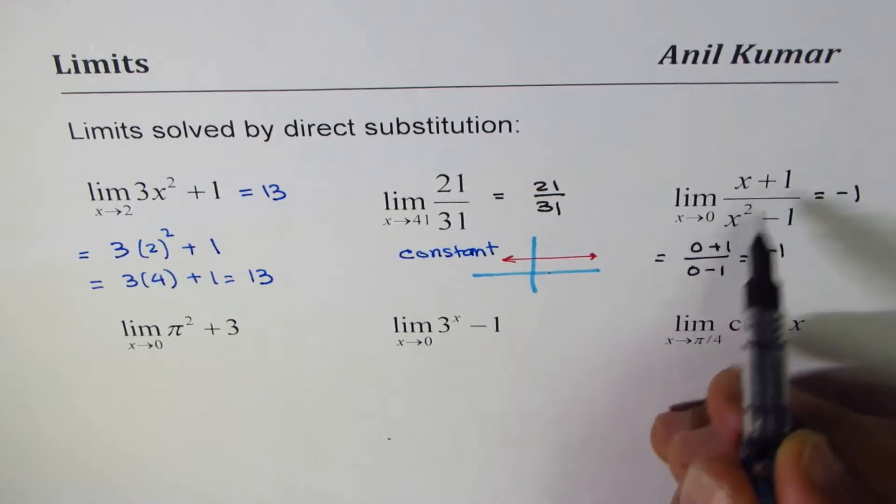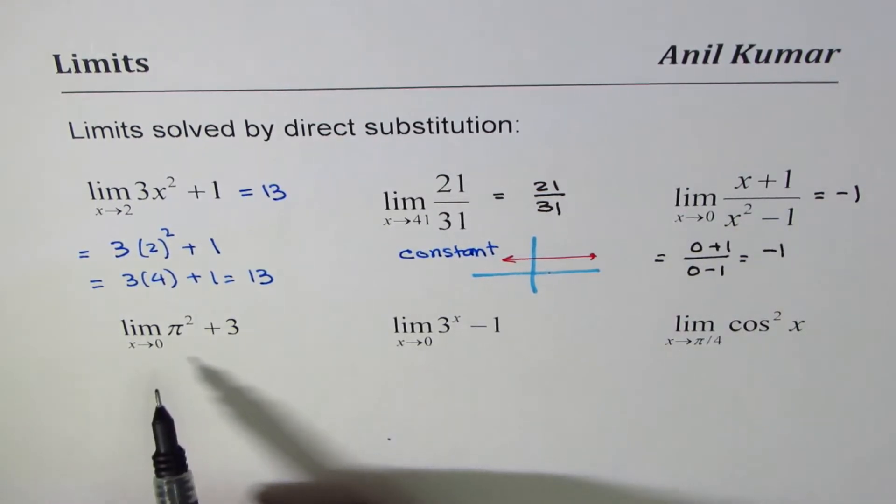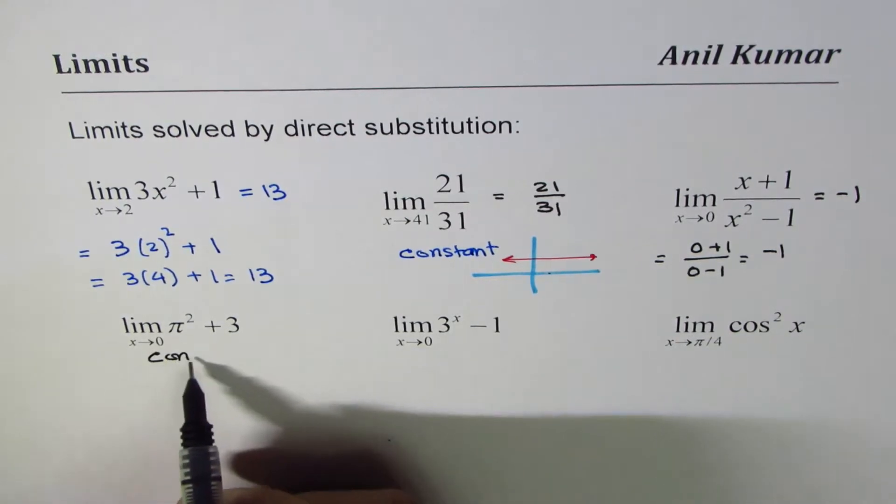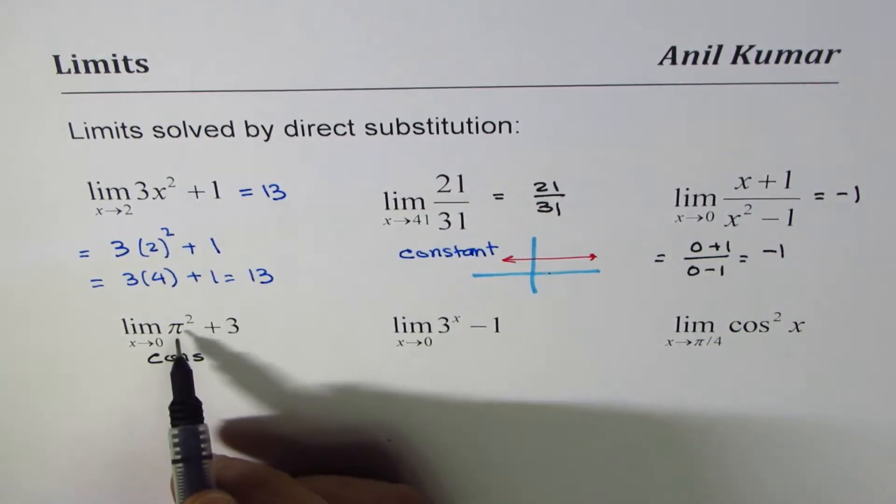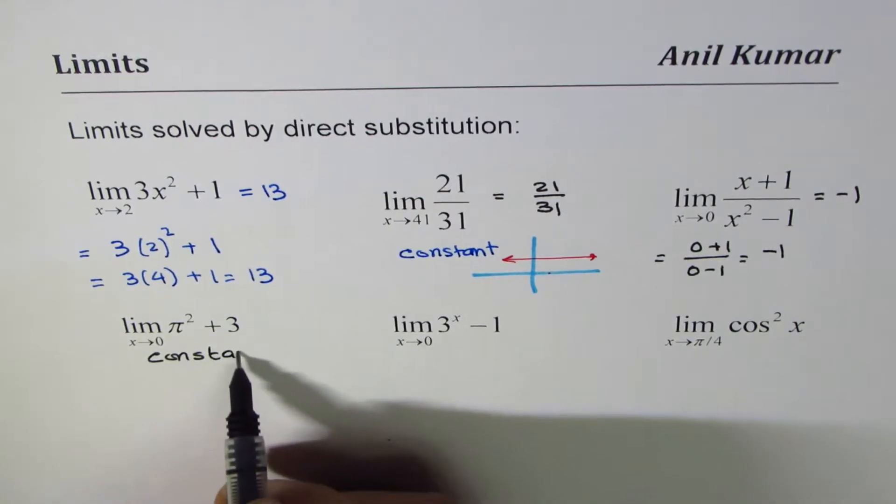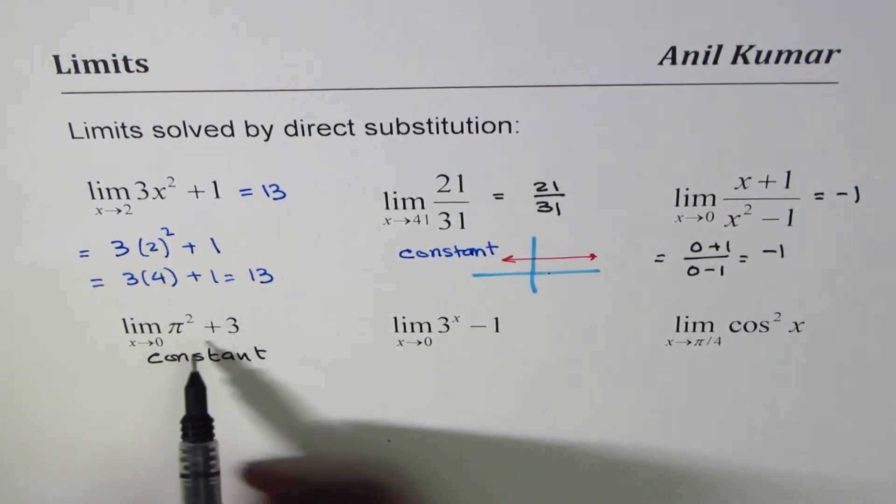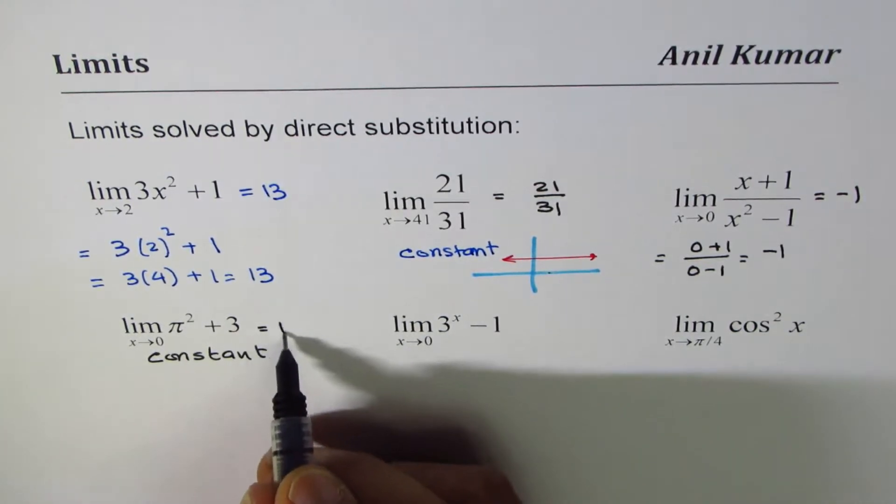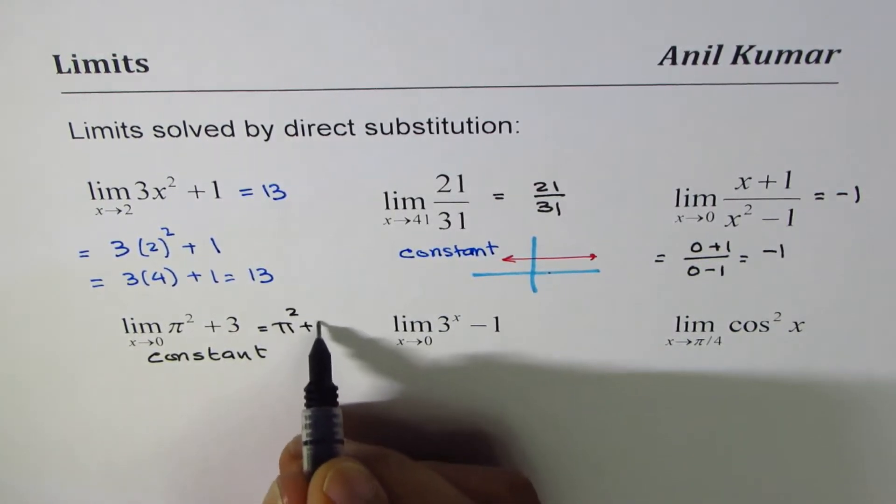Now here we have limit π² + 3 when x approaches 0. Now this is also a constant function. Pi is constant, 22/7 or 3.14, so for any constant function the limit is the constant value, which in this case is π² + 3. So we'll write the same answer, and this is similar to the question we did earlier.